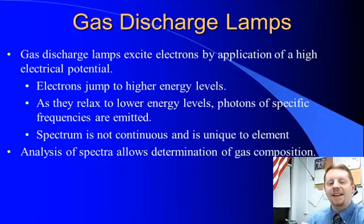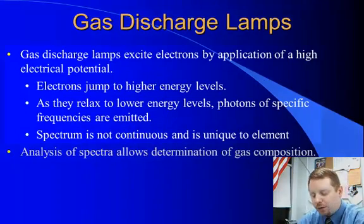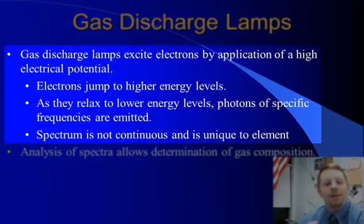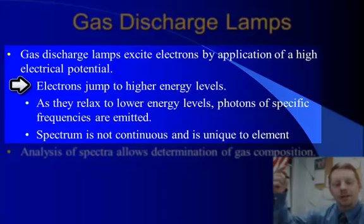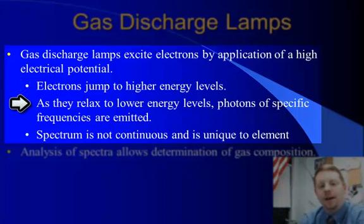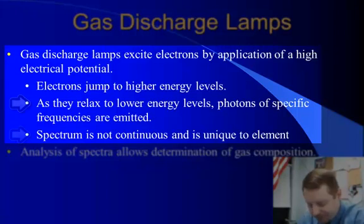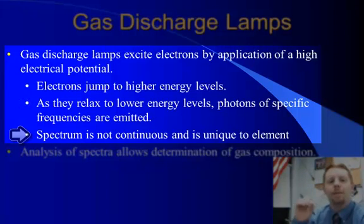A gas discharge lamp works by exciting electrons with a very high voltage. As the electrons jump to an energy level, they relax shortly thereafter, falling back down to a lower energy level and emitting a photon. That photon comes at a specific frequency. The spectrum, therefore, isn't continuous. You have photons at specific energy levels and frequencies, corresponding to the electron transitions.